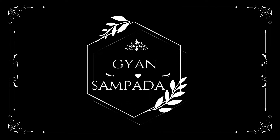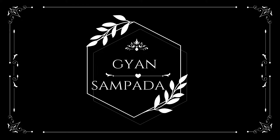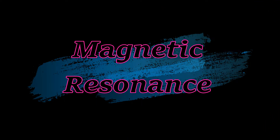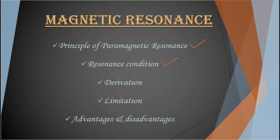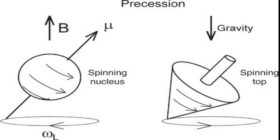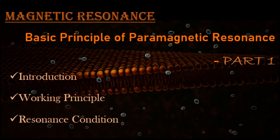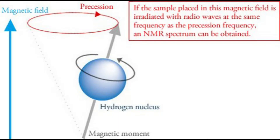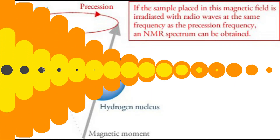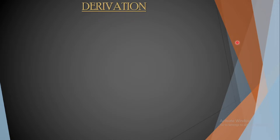Hello everyone and welcome back to my channel Gyan Sampadam. In our previous class we started a new concept of magnetic resonance — we discussed the introduction, basic working principle, and resonance condition of paramagnetic resonance. In today's class we are going to continue with the same concept, so if you have not gone through the previous class, go through it first because some equations noted there will be used today. Let us start our today's class on the derivation of the principle based on equations of motion.